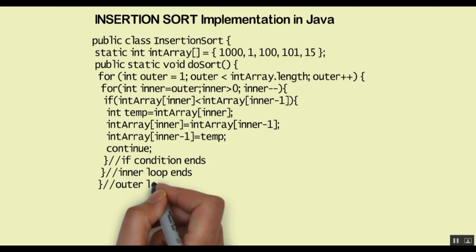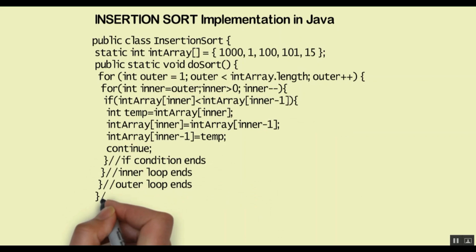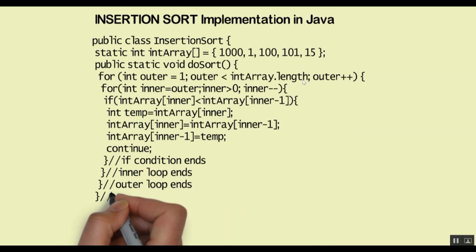Before finishing off I want to explain how the future iterations will work. When the second element in the unsorted sublist — which is 100 — is picked up in iteration 2, 1 and 1000 are in the correct position. So 100 will find 1000 and swap itself with 1000, as we saw in the whiteboard animation. 1000 will move towards the right and 100 will next find that 1 is smaller than it, so it will stay where it is. The next iteration will end with 1, 100 and 1000 in the correct sorted position.